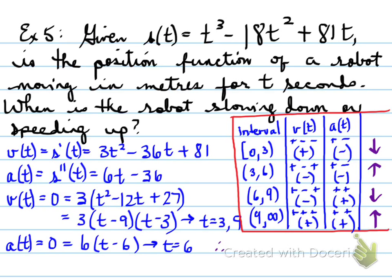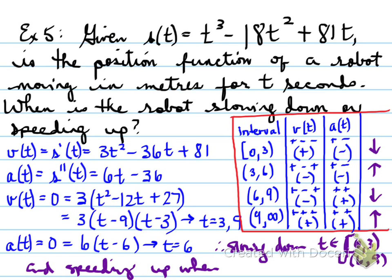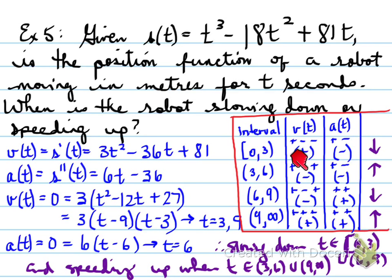Therefore, the robot is slowing down on the intervals from 0 to 3 and from 6 to 9, and speeding up from 3 to 6 and from 9 to infinity. In terms of direction: slowing down moving away from the origin, speeding up moving towards the origin, slowing down towards the origin, speeding up away from the origin.